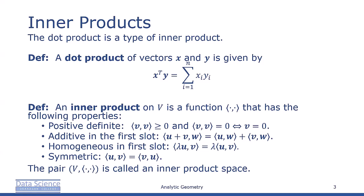An inner product on V is a function that has the following properties. It's positive definite, which means the inner product of v with itself is greater than or equal to zero, and equal to zero if and only if v is the zero vector.